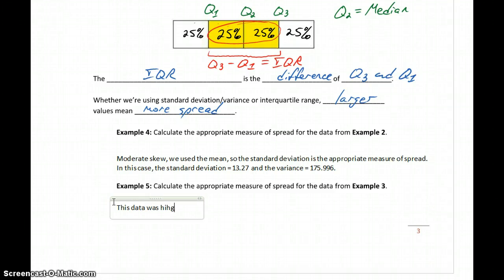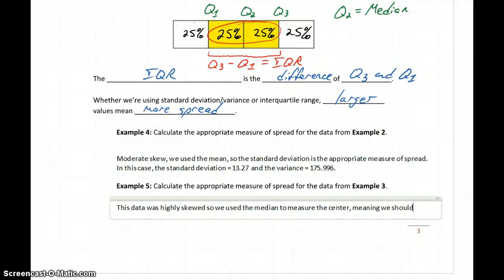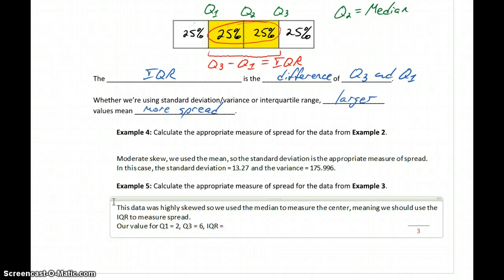So this data was highly skewed, so we use the median to measure center. So since we're using the median to measure the center, we should use the interquartile range to measure spread. Our value for Q1 ended up being 2, Q3 was 6, and the IQR was 4.